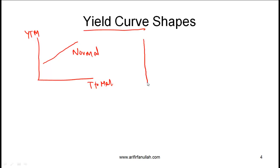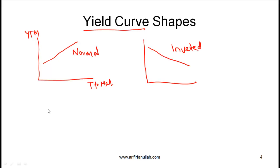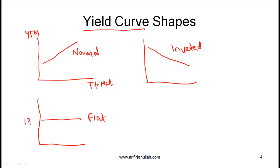On the other hand, if short-term interest rates are high and long-term interest rates are low, then we have what's called an inverted yield curve, or a downward sloping yield curve. Another scenario is where yields are flat across different maturities — this is a flat yield curve.